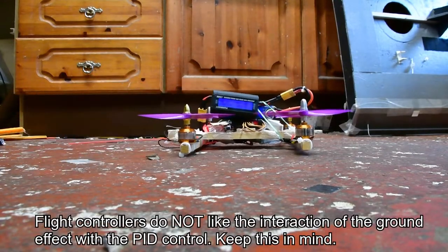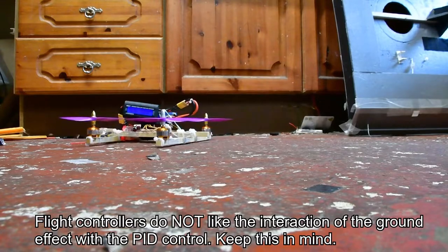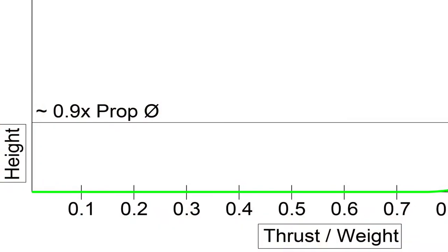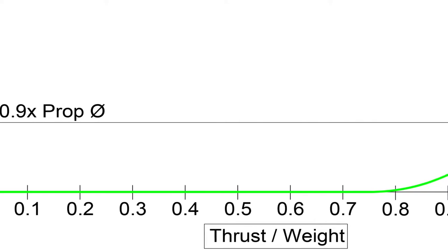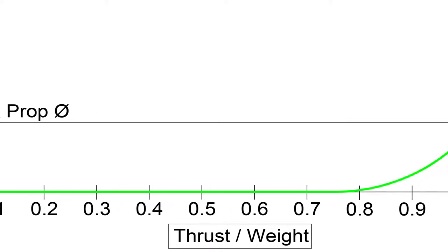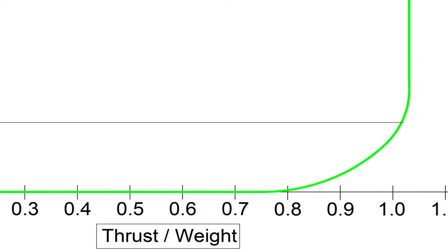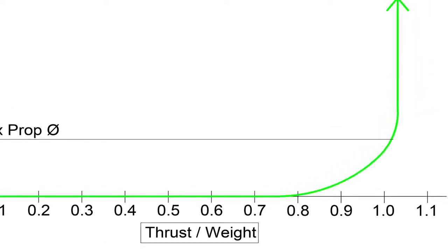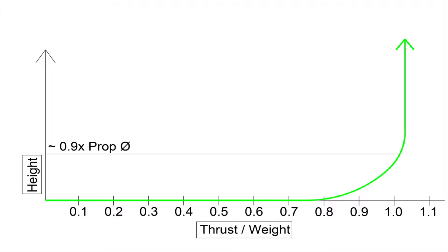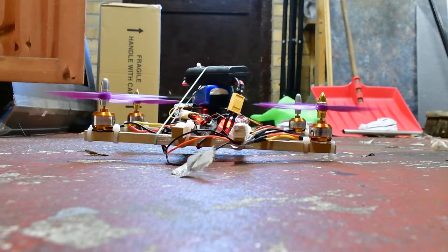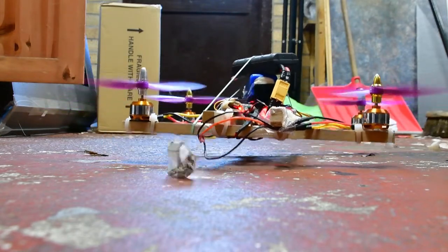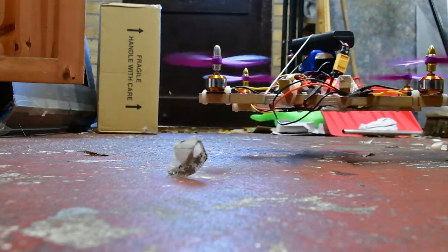A multirotor can't do anything with a thrust to weight of 0.5 other than sit there burning up batteries, or if you dropped it off a cliff it would fall somewhat slower. But in terms of serious answers, a multirotor can't do anything with a thrust to weight of 0.2, 0.3, 0.4, even 0.9. I'm just going to awkwardly interject that now that I've done a bit of testing with the little quadcopter, I'm a little bit less confident about what I just said.